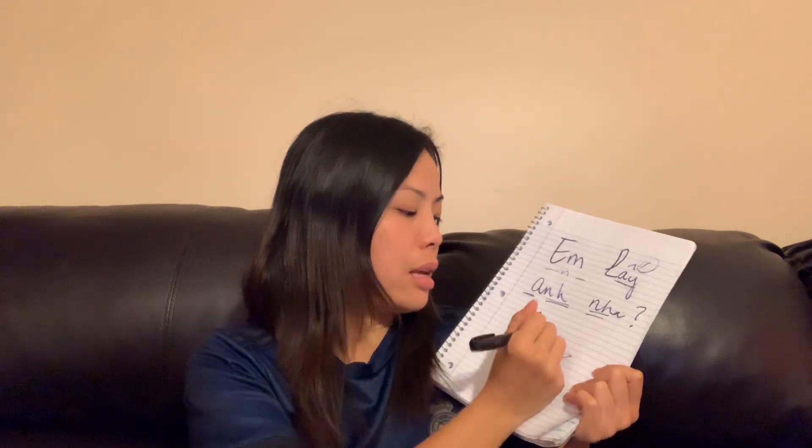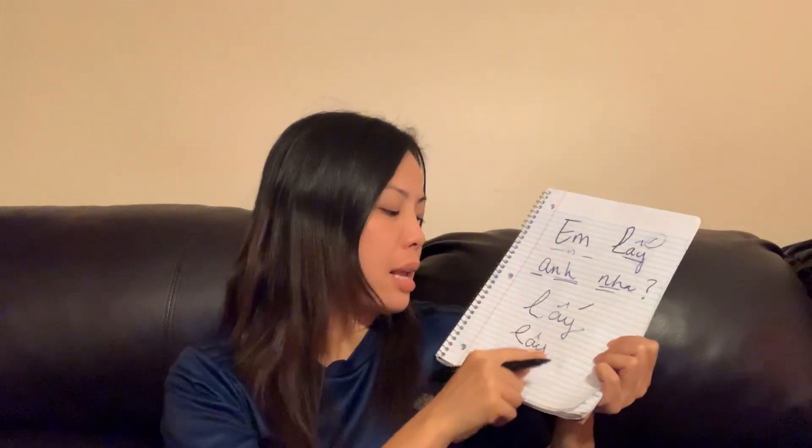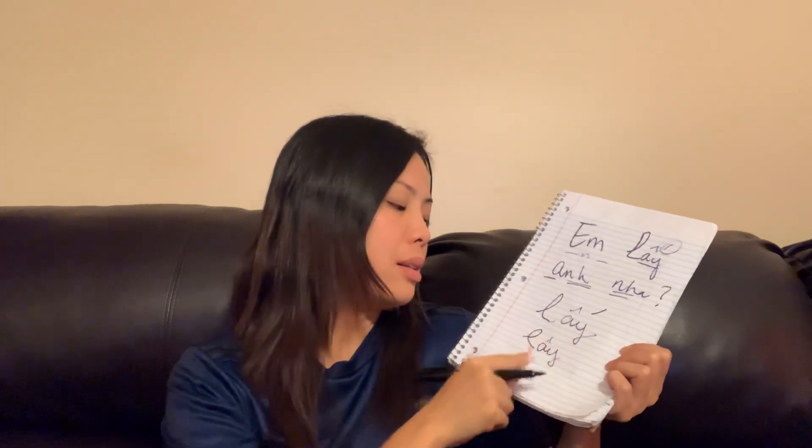Let's put it all together: em lấy anh nha. 'Em' is easy to pronounce. For 'lấy': l, then ê, then the sắc tone mark — lấy. This is an 'l' by the way — l, ê, and together with sắc that gives you lấy. Then 'anh': á, nhờ — anh.